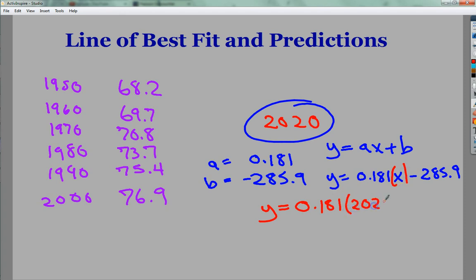So I'm going to put 2020 minus 285.9. Then I can use my calculator to go back in and type it in. Or I could do it by hand, which I'm not going to do because it's huge to try to do all those by hand. Plus, I'm trying to do it quickly so you don't sit here forever.